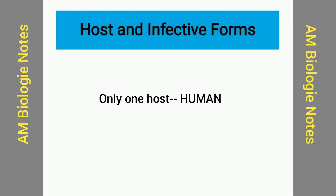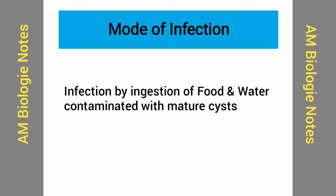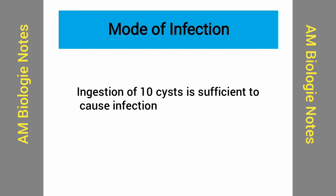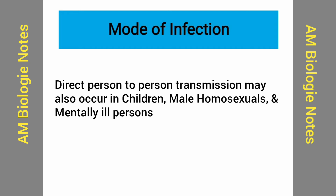Giardia passes its life cycle in one host: the human. The infective forms are the mature cysts. Mode of infection: man acquires infection by ingestion of food and water contaminated with mature cysts. Ingestion of as few as 10 cysts is sufficient to cause infection. Children are commonly affected. Direct person-to-person transmission may also occur in children, male homosexuals, and mentally ill persons.